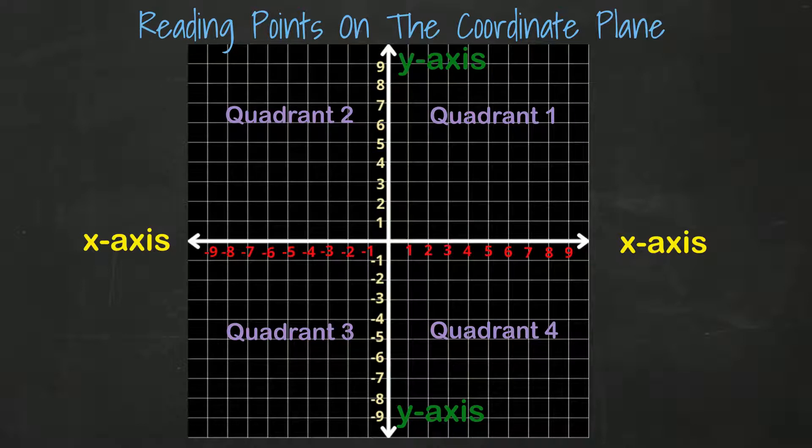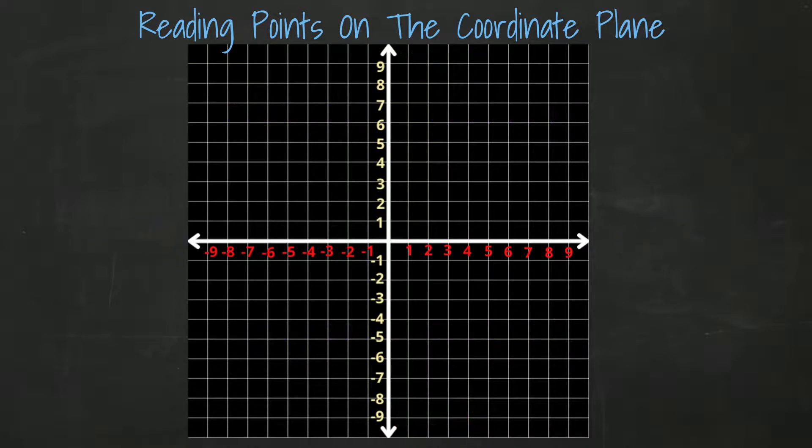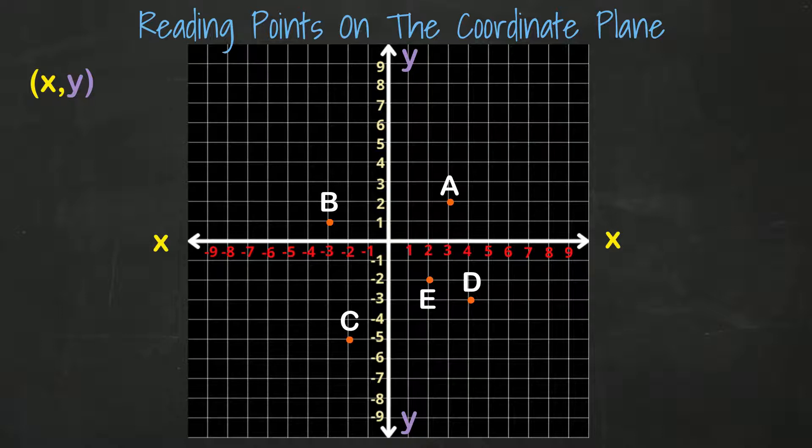Coordinates are the x values and y values that tell you how to find a point on the coordinate plane. Today, we're going to take a look at the points on the coordinate plane and identify what those coordinates are. Here you will see a coordinate plane that has five points labeled A through E. We will go through each one and identify what are the coordinates that make these points.